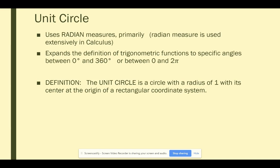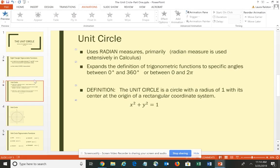So the definition – what is a unit circle? If we're going to talk about it, what is it? The unit circle is a circle with a radius of 1 with its center at the origin of a rectangular coordinate system. So let me see if I can kind of sketch you a rough picture.